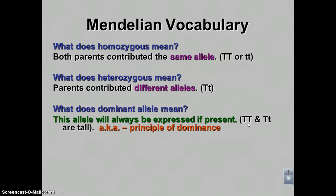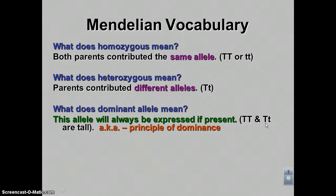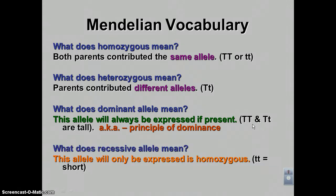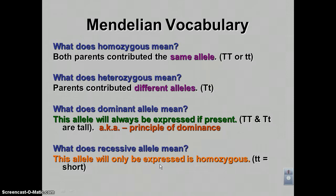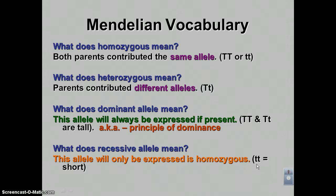This individual here is homozygous dominant — both parents gave the same allele. This individual is heterozygous. We do not say 'heterozygous dominant' because that is redundant; the moment you say heterozygous, you already know it has at least one dominant allele. Recessive means the allele can only be expressed when homozygous — you must be homozygous recessive to show the recessive trait. When both parents give you the recessive allele, that plant will be short.